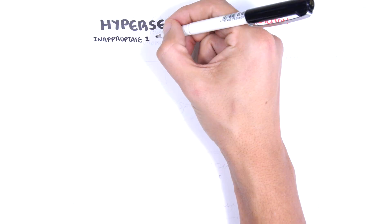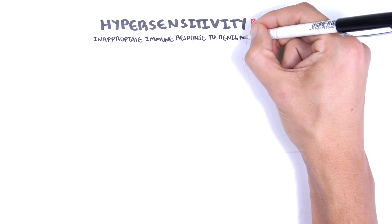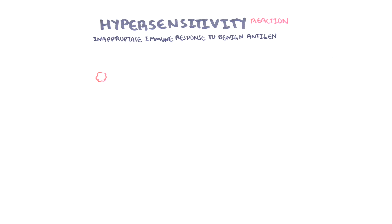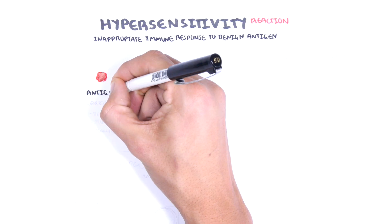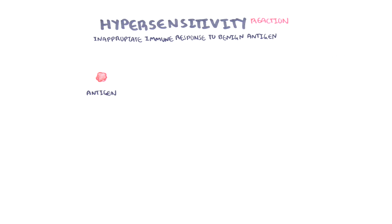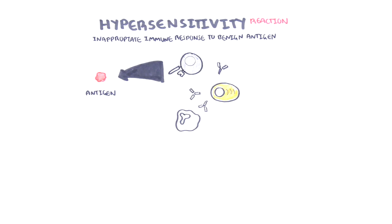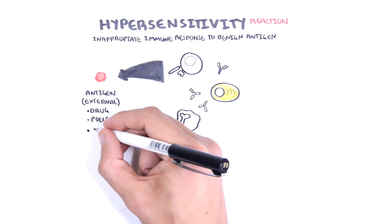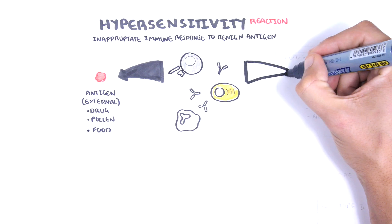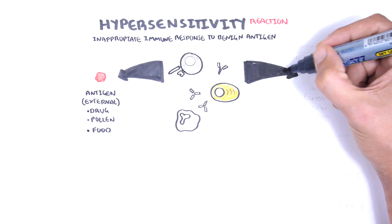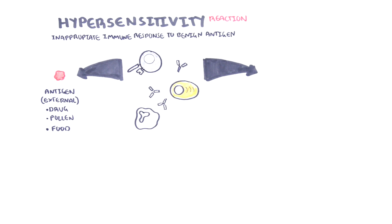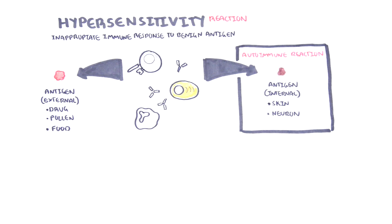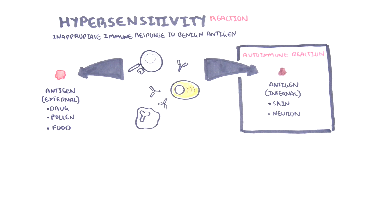Hypersensitivity reactions are exaggerated or inappropriate immune responses to a benign antigen. It is the immune response, and not the antigen, that is actually harmful. An external antigen such as a drug, pollen, or food can elicit an inappropriate immune response. However, an inappropriate immune response to an internal antigen, such as your own skin or neuron, would be called an autoimmune reaction.